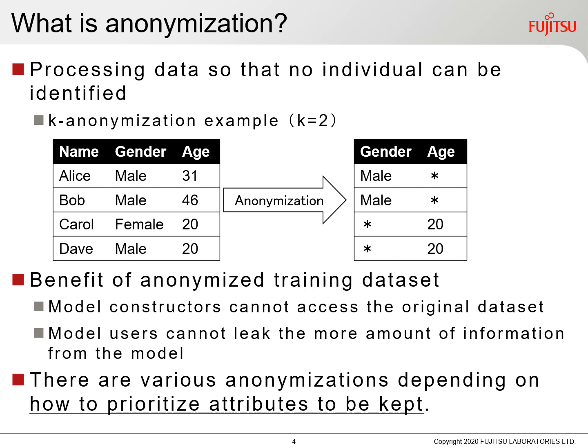What is anonymization? Anonymization is the processing of data so that no individual can be identified. An example is the popular k-anonymization. When the parameter k equals 2, the data on the left is modified into the data on the right. If adversaries try to identify Alice, they cannot narrow down Alice's records from the table on the right to less than two records. By processing the training data in this way, even if the training data is leaked, the amount of information exposed is less.